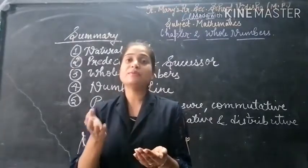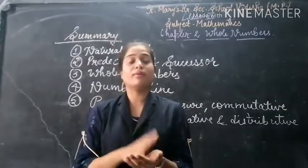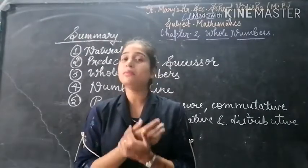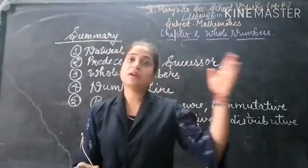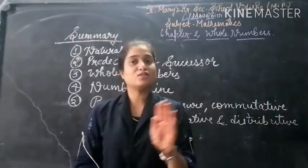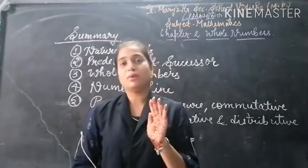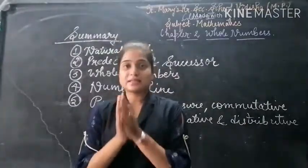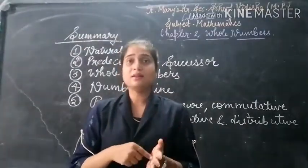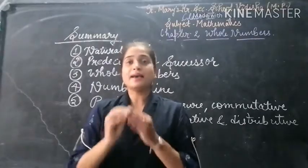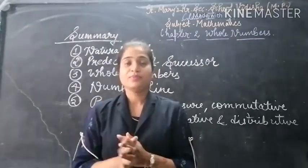The predecessor of 1 is 0. The predecessor of 0 would be nothing — it would become negative, which is not a whole number. So every whole number except 0 has a predecessor, and every whole number has a successor.